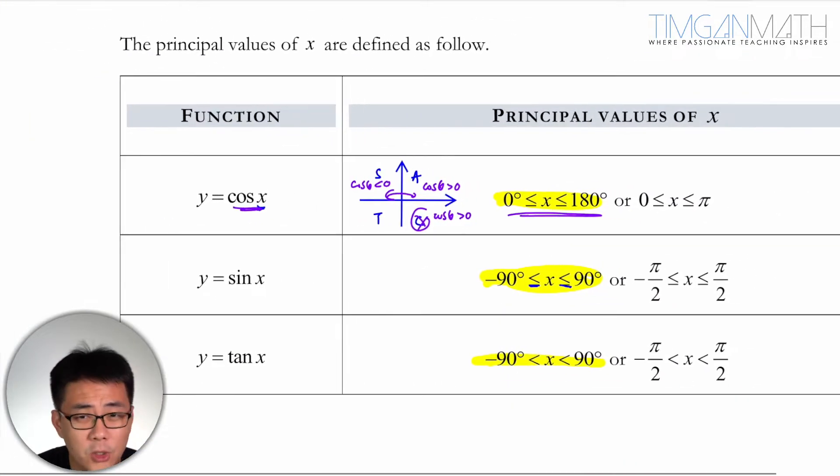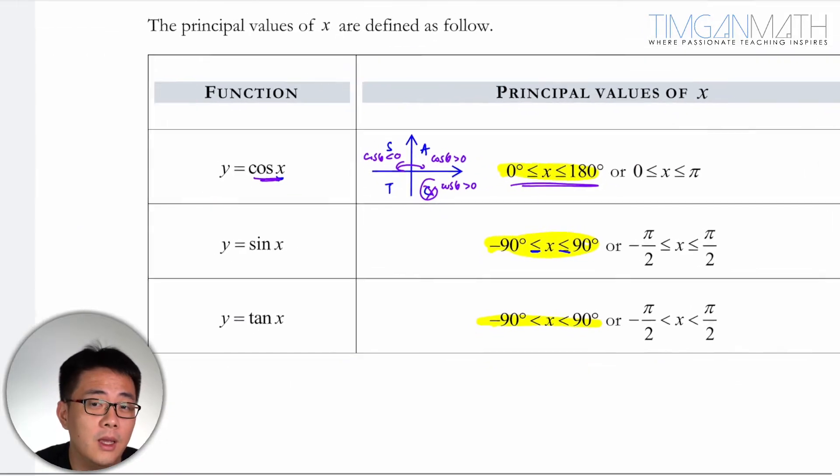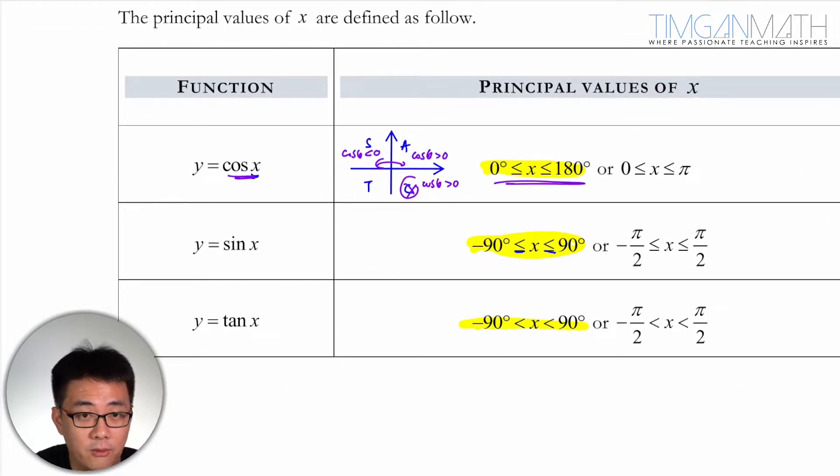Now do you need to understand this? No, you don't need to. You just need to know that actually the principal values are set for cosine ratio. The principal values are in this range, 0 to 180 degrees.